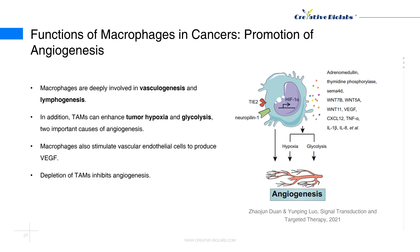Through the synthesis of WNT7b, macrophages also stimulate vascular endothelial cells to produce VEGF. Other tumor-associated macrophage-produced proangiogenic molecules that recruit or activate endothelial cells include CXCL-12, TNF-alpha, IL-1-beta, IL-8, SEMA-4D, adrenomedullin, and thymidine phosphorylase.